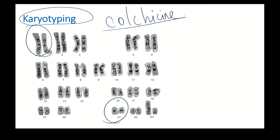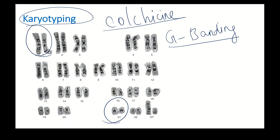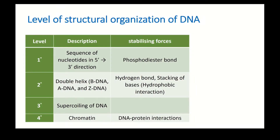For karyotyping, they use colchicine, which is a mitotic spindle inhibitor that causes metaphase arrest. They then do Giemsa staining — that is why the most common type of karyotyping is G-banding. You can see alternate dark and light bands; this is G-banding.